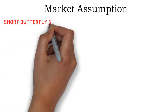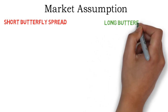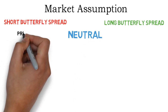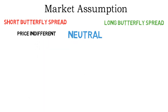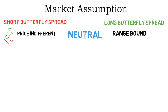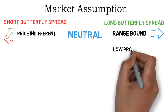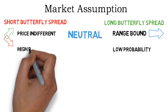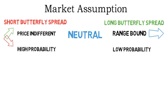Next up is the market assumption of these spreads. Both spreads are neutral strategies, but they are a different kind of neutral strategy. Short butterfly spreads are price indifference strategies, meaning that it does not matter in which direction the price moves as long as it moves. Long butterfly spreads, on the other hand, are range bound strategies — the price ideally should stay in a certain price range. As this range usually is very narrow, long butterflies are a rather low probability strategy and short butterflies are a rather high probability option strategy.